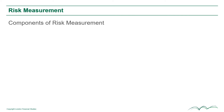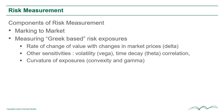The components of risk measurement include, firstly, marking to market. Secondly, measuring so-called Greek-based risk exposures. This is the rate of change in value of your portfolio with changes in market prices, called delta, and other sensitivities such as the sensitivity to volatility, called vega, or time decay, theta, or correlation, and other Greek-based risk exposures such as the curvature of exposures given by convexity and gamma.